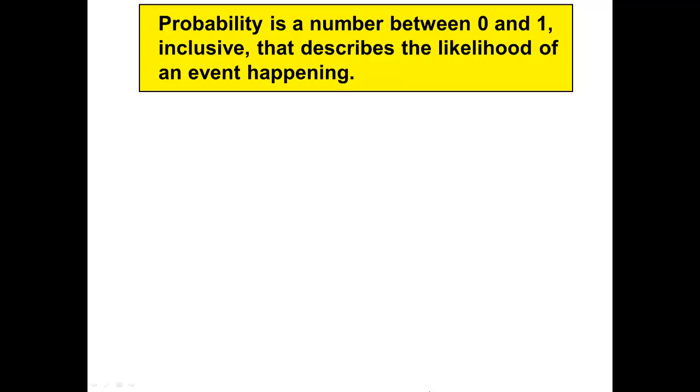Let's look at this slide. Probability is a number between 0 and 1, inclusive, meaning that it includes both the 0 and the 1 and all the numbers in between. And it describes the likelihood of an event happening.